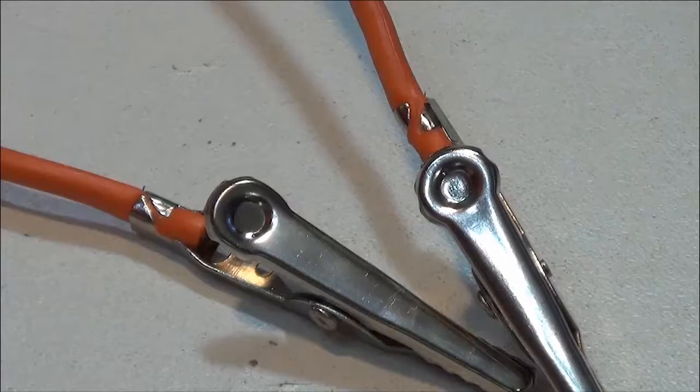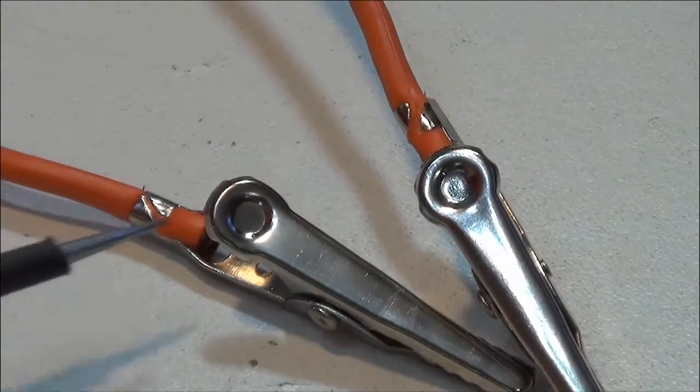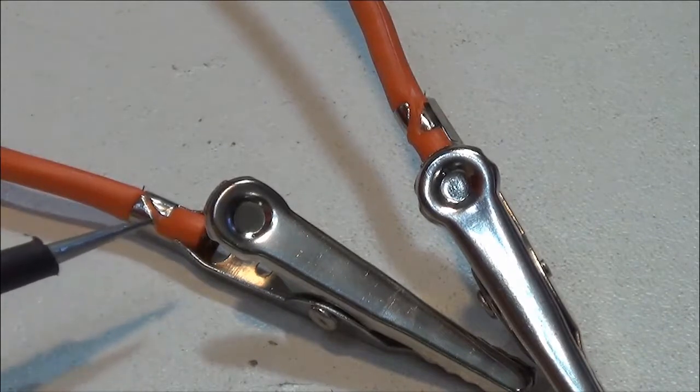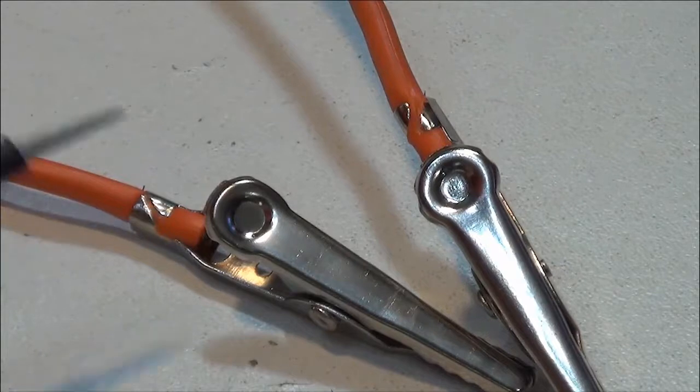This is a close-up view of the crimp connection and what we're going to do is we're going to either pull the wire out of the alligator clip or use a small set of needle nose pliers and open up the crimp.